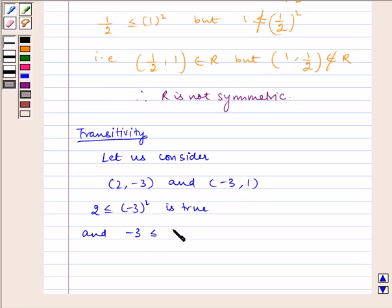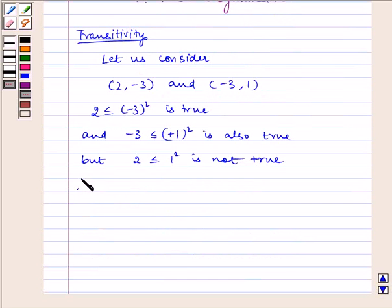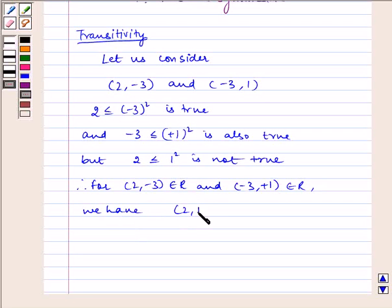-3 ≤ (1)² is also true. But 2 ≤ (1)² is not true. Therefore, (2, -3) and (-3, 1) belong to R, but (2, 1) does not belong to R.